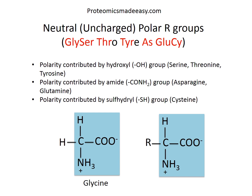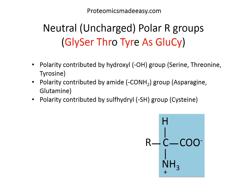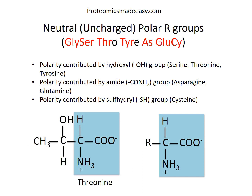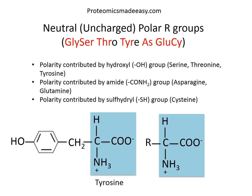The polarity of Serine, Threonine, and Tyrosine is contributed by their hydroxyl groups. The polarity of Asparagine and Glutamine is contributed by the amide group, and the polarity of Cysteine is contributed by the sulfhydryl group. Serine has the R group CH2OH. Threonine similarly has a hydroxyl group with the R group CHOH-CH3. Tyrosine is like phenylalanine with a hydroxyl group attached at the phenyl ring.